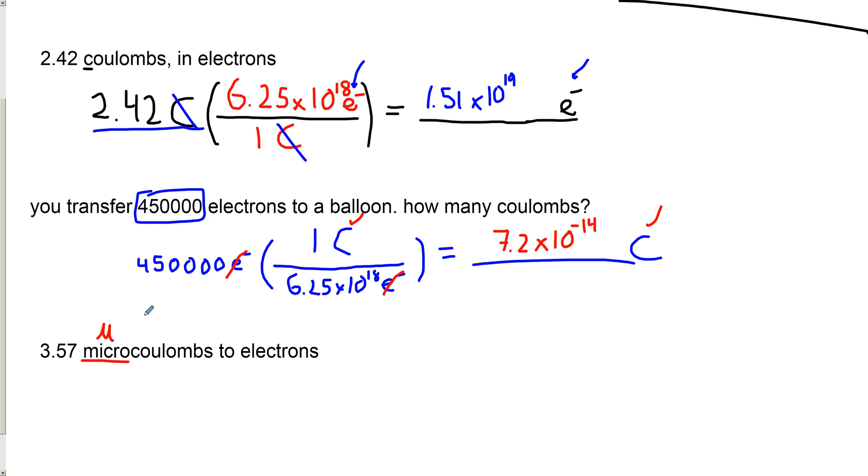So we can turn this 3.57 micro coulombs. There's a little quick cheat we can do, which is micro is going to be times 10 to the minus 6. You might remember words like millie. Millie would be times 10 to the minus 3. Because 10 to the minus 3 is 1 on 1,000. Micro is 1 on 1,000,000. So that's 10 to the minus 6. It's a very small number.